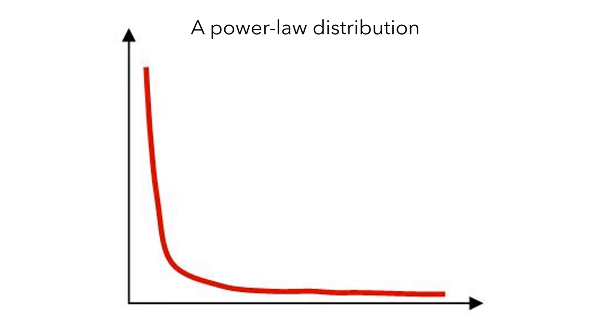In small world networks, if you plot the distribution of degrees of all nodes, you don't see the normal distribution. Instead, you see a power law distribution.